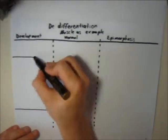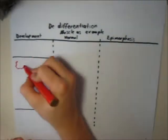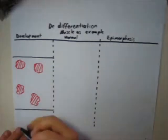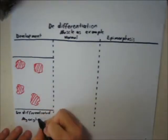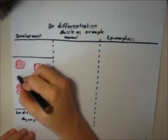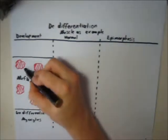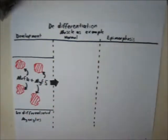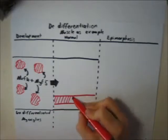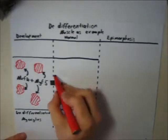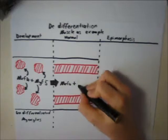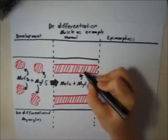myogenic regulatory factors MRF4 and MYF5 act on the undifferentiated cells. This results in their developing into differentiated myocytes, with MRF4 and MYF5 still being expressed and acting on the cells.